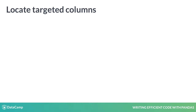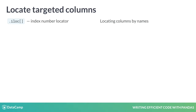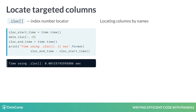We use iloc and loc to target rows, but we can also use them to locate different features in a pandas data frame. In this example we want to select the first three columns of the poker data set — the symbol and the rank of the cards that came first in each hand, and the rank of the cards that came second in each hand. We can use the iloc function to locate a feature by index. The syntax is simple: we denote with a colon that we want all the rows of the data frame, and then after the comma we use a colon followed by a three to denote that we want all the columns until the third one.